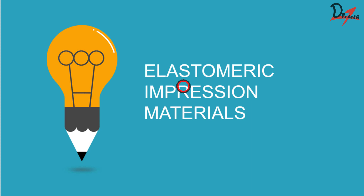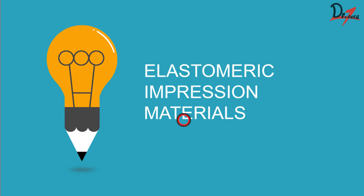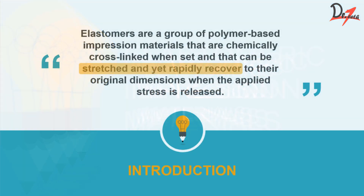This material soon came into dentistry. We had elastic materials earlier, like alginate, but the problem with them was that they were not dimensionally stable and not that accurate. In the need of a better impression material, elastomers were taken from industrial use and welcomed into dentistry.